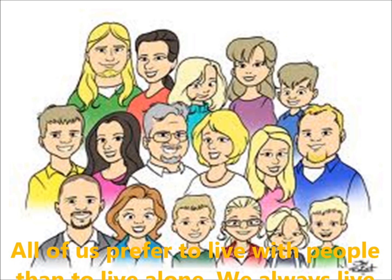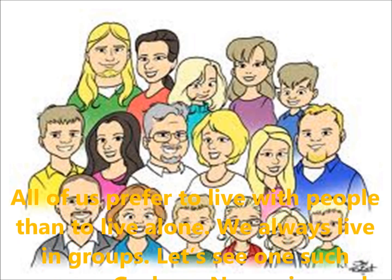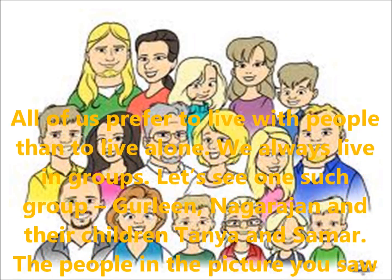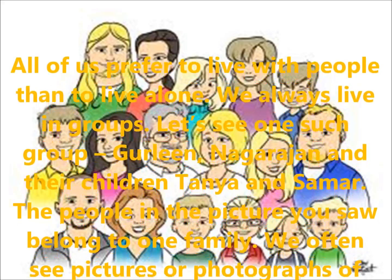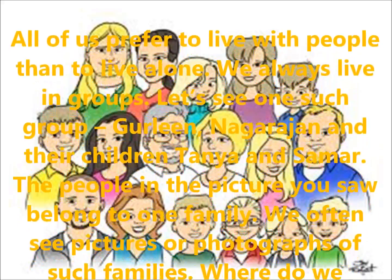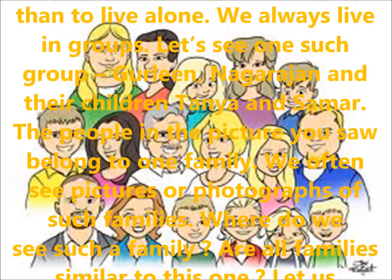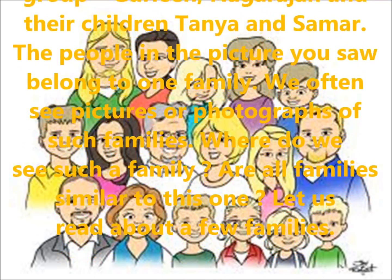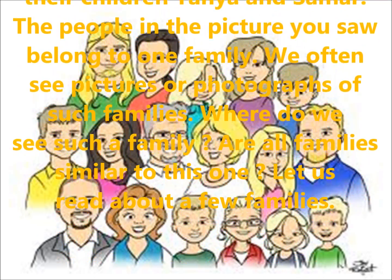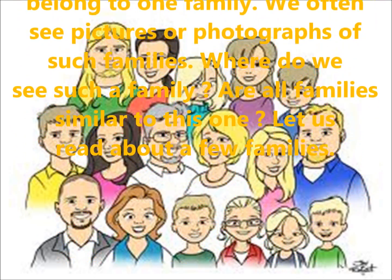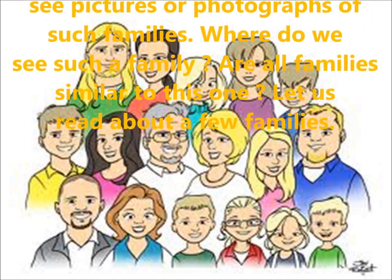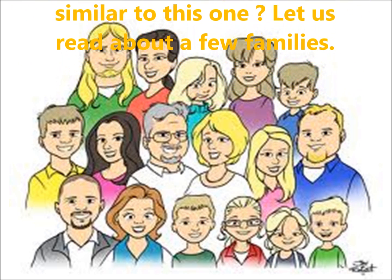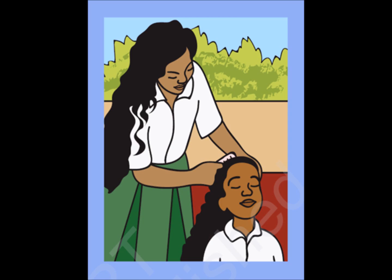All of us prefer to live with people rather than to live alone. We always live in a group. Let us see one such group — Guli, Nagarjuna, and their children Tanya and Samarkal. The people in the picture belong to one family. We often see pictures or photographs of such families.